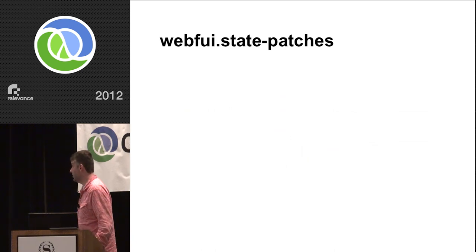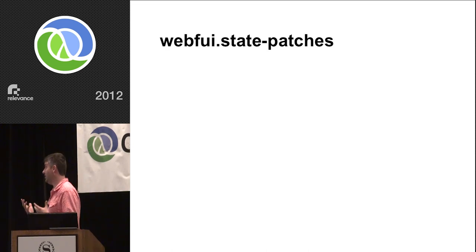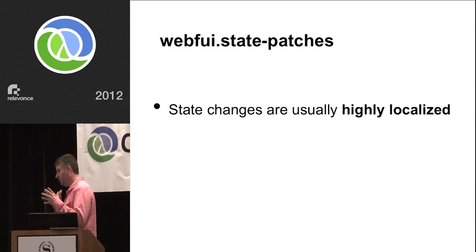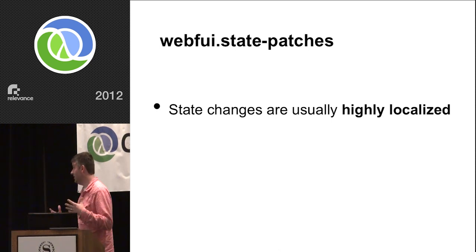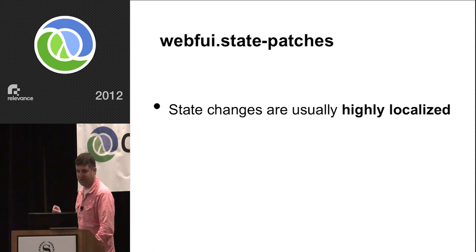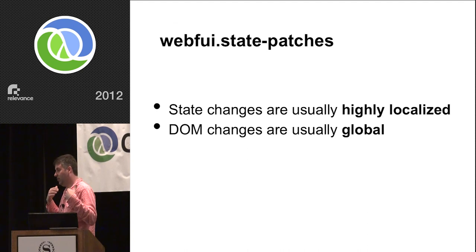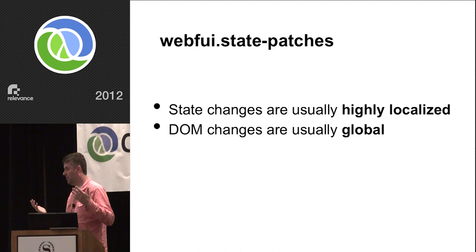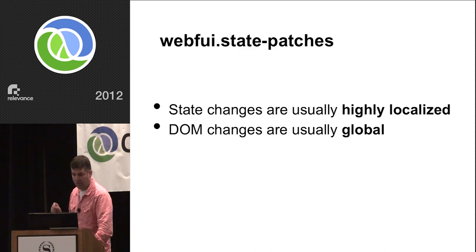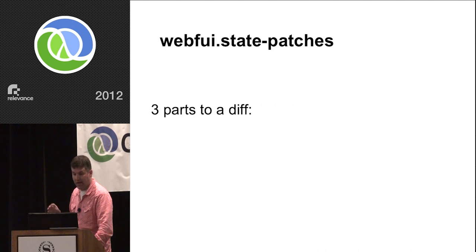That's what the second library — state patches — is for. It lets you write just a diff description of how you want the state to change, then applies it to the state. This works because the state in your program will always be very similar to the problem domain. When the user performs an action, it will usually only modify one or maybe a couple of variables in the state, because of how you've organized it. So changes are highly localized — we want to make pinpoint changes to state. If you have a website for selling widgets and the user picks a new widget, the entire web page may change, but the state probably only changes one variable like 'selected-widget-id.'